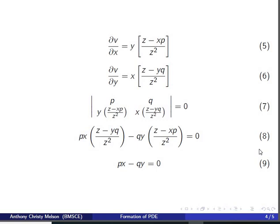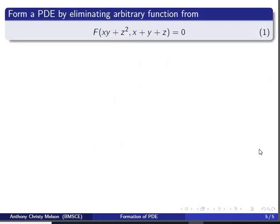Now we will move on to one more question. Form a PDE by eliminating arbitrary function from f(xy + z², x + y + z) = 0. Here we can take u as xy + z² and v as x + y + z. So we have f(u, v) = 0.